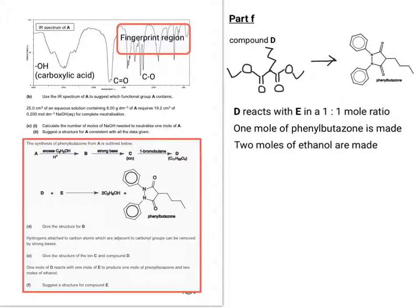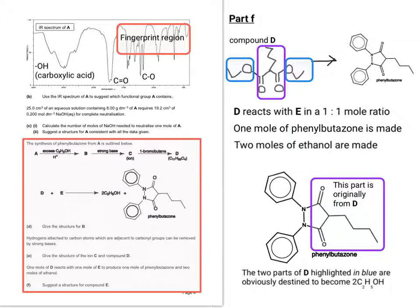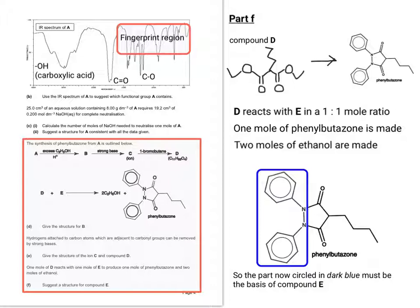So let's now have a look at part F. So, taking the phenylbutazone from before, D reacts with E in a 1-to-1 mole ratio, 1 mole of phenylbutazone was made, and 2 ethanol. So let's have a think about what this might mean. So it should be quite easy to look at the phenylbutazone molecule and say that the part that's circled or squared in purple is originally from D. As I've highlighted. So it shouldn't be too difficult to look at the drawing of D and see that the two blue circled sections will end up as two ethanol. So the bit now circled in dark blue must correspond to compound E. So I'll draw out compound E for you in dark blue so you can see the connection.